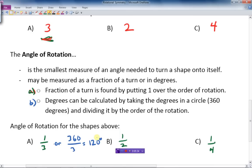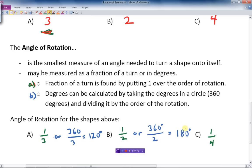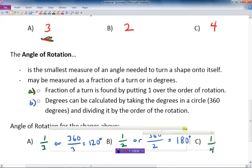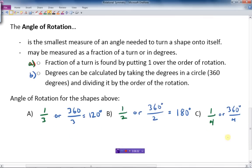So the B part would be a half a turn, or 360 degrees, degrees in a circle, divided by 2, because the order of rotation is 2, and that gives us an angle of 180 degrees, which is half a circle. And lastly, our quarter of a turn here would be 360 degrees divided by 4, and this one is 90 degrees.